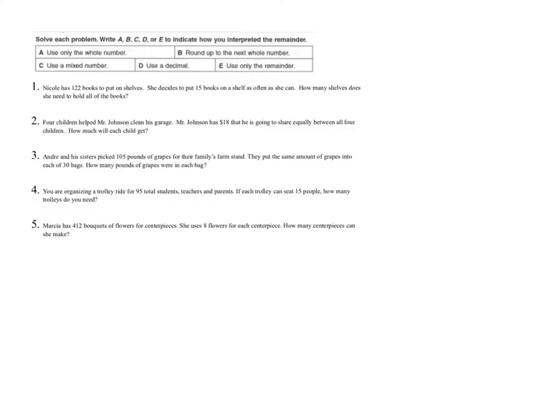Strategy A is using only the whole number, which means you're going to ignore the remainder. Strategy B is rounding up the remainder so that our answer becomes the next whole number. Strategy C is writing your answer as a mixed number, so the remainder will be written as a fraction. Strategy D is writing the remainder as a decimal. And Strategy E is only caring about the remainder — the remainder is the answer to your problem.